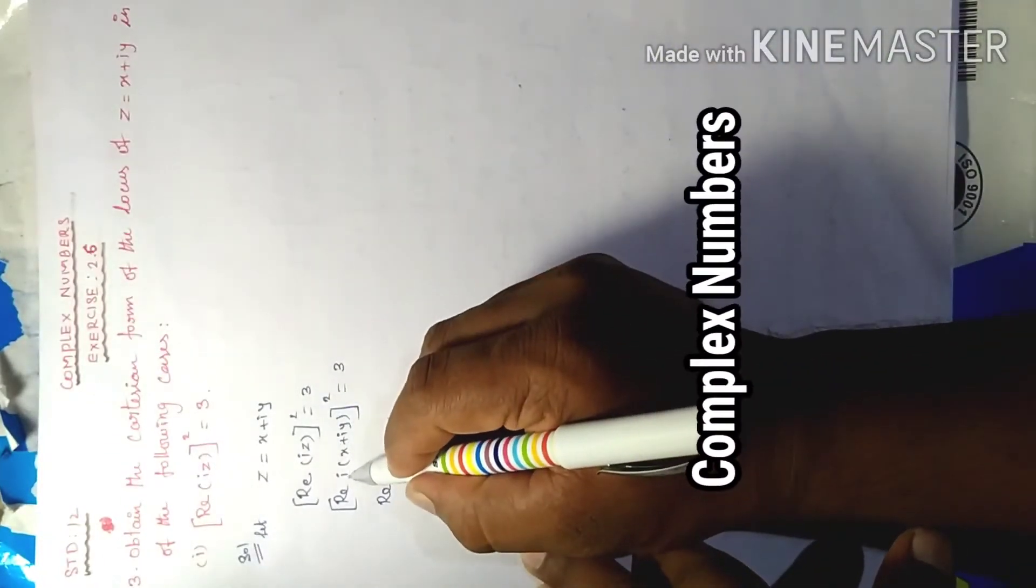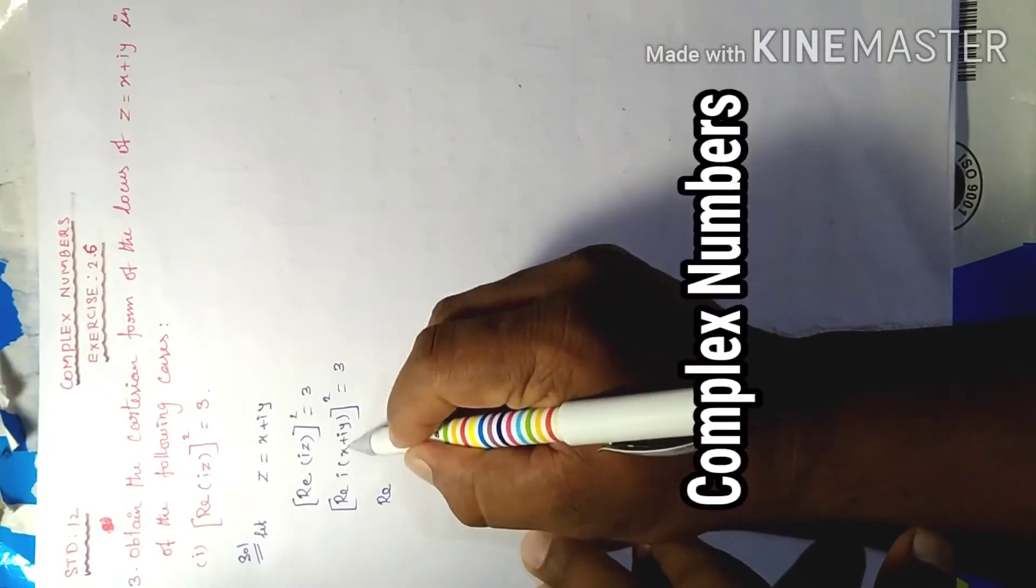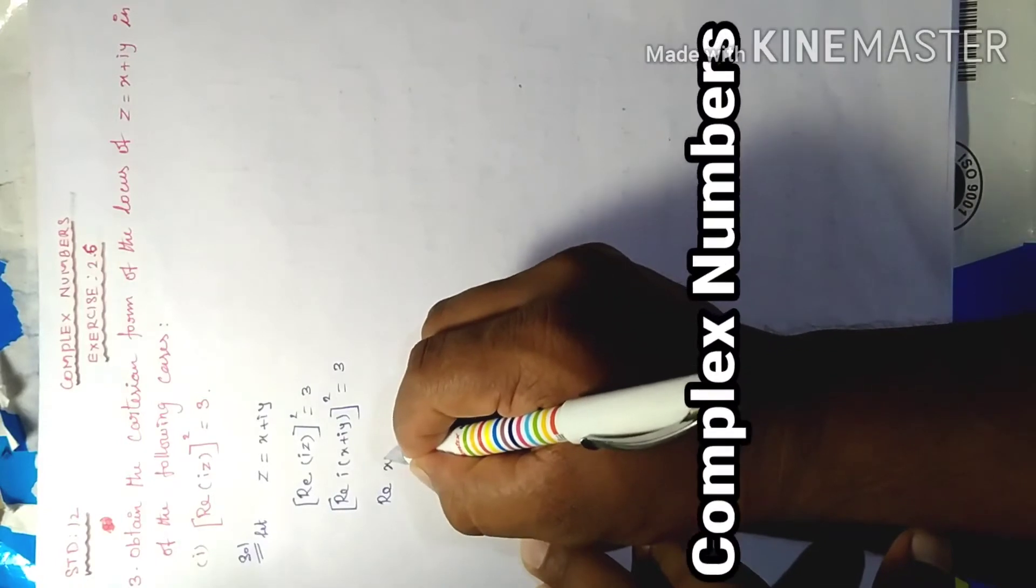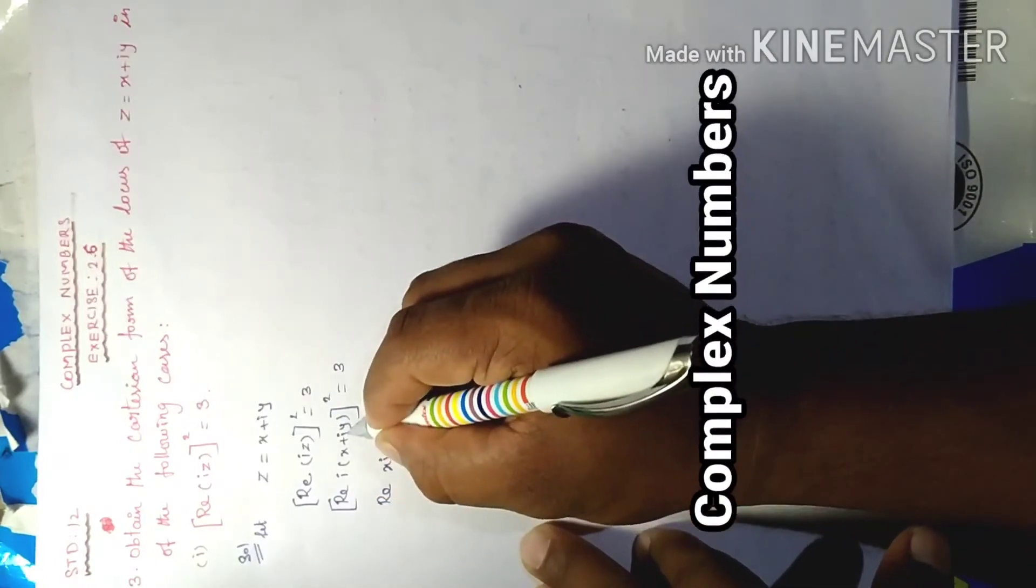Real part of i times each term. i into x is ix, i into i is i square.